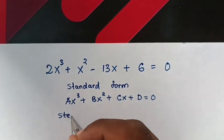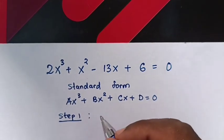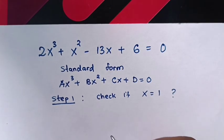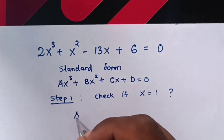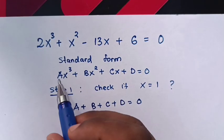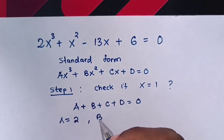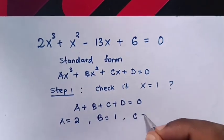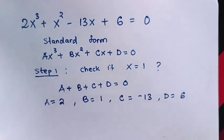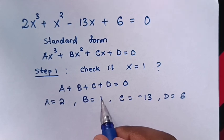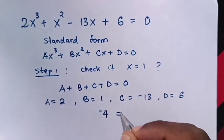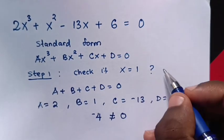In step 1, we are going to check if the value of x is equals to 1. From our equation, a plus b plus c plus d is equals to 0. If it is equals to 0, then x is equals to 1. The coefficient a is 2, b is 1, c is negative 13, and d is 6. When we add: 2 plus 1 is 3, 3 minus 13 is minus 10, minus 10 plus 6 is minus 4, which is not equals to 0. Therefore, x is not equals to 1.